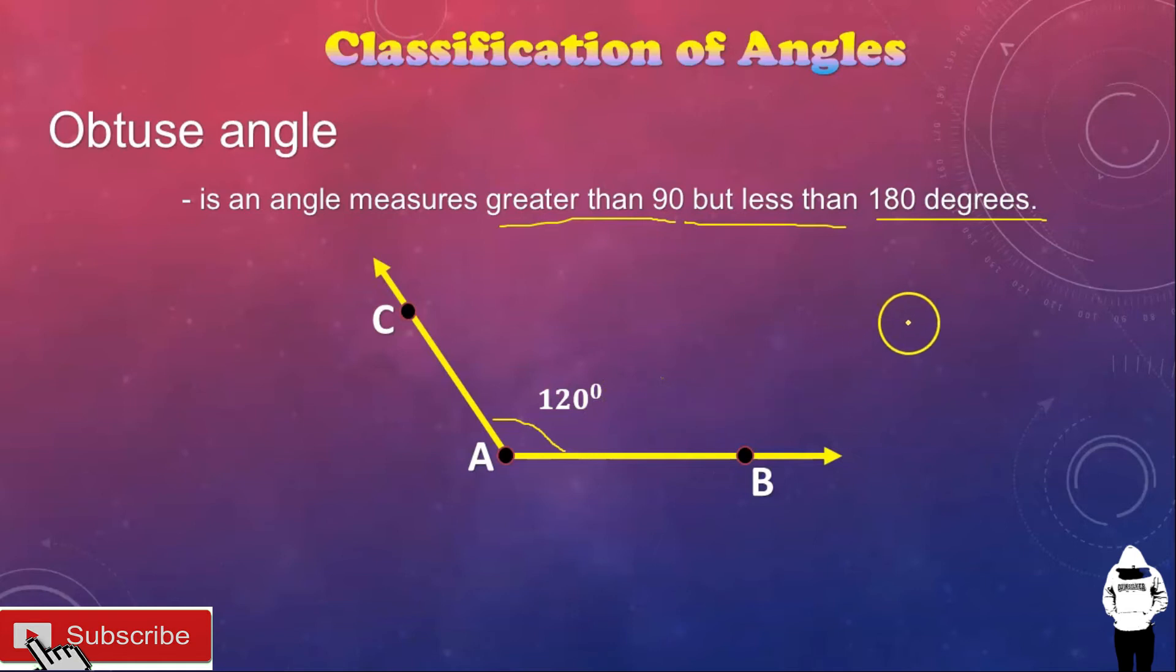Another example, 130 degrees. So, this is an example of an obtuse angle because nasa gitna ng 90 degrees to 180 degrees. Another one, 150. This is an example of an obtuse angle.